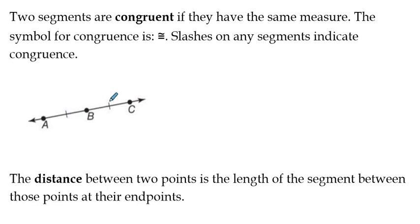Slashes on any segment indicate congruence here. So in this diagram here, we have line AC here. We have two slashes, a slash between points A and B and a slash between points B and C. So that tells us that segment AB is congruent to segment BC. Ironically enough, it also tells us that point B is the midpoint of AC, but that's the next section. We'll get into that in another video.